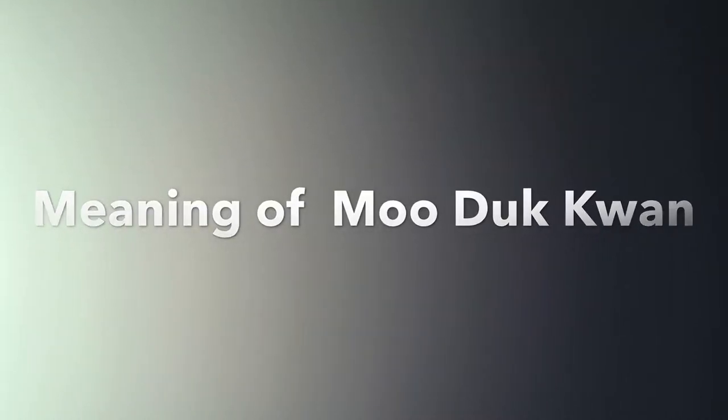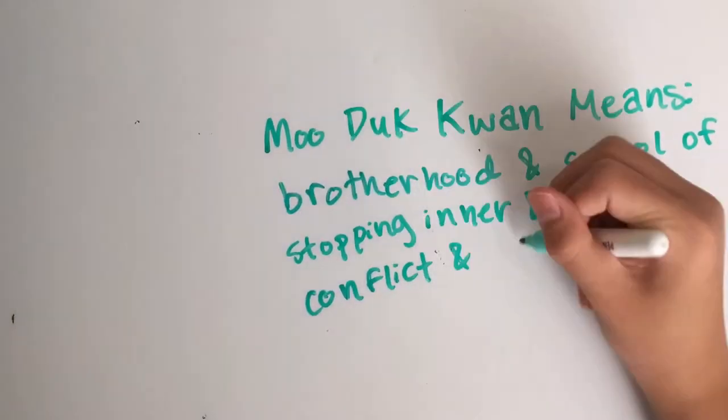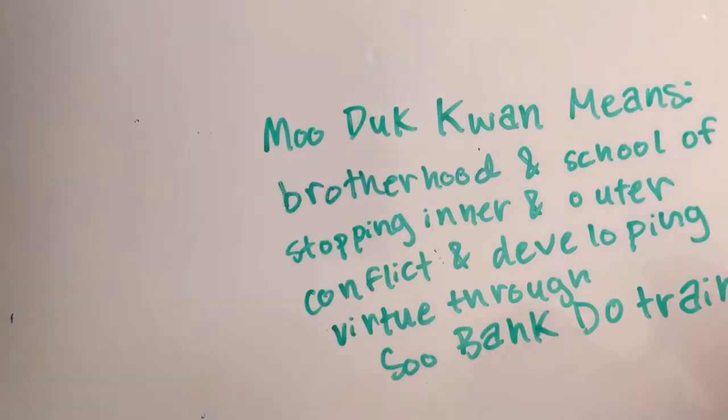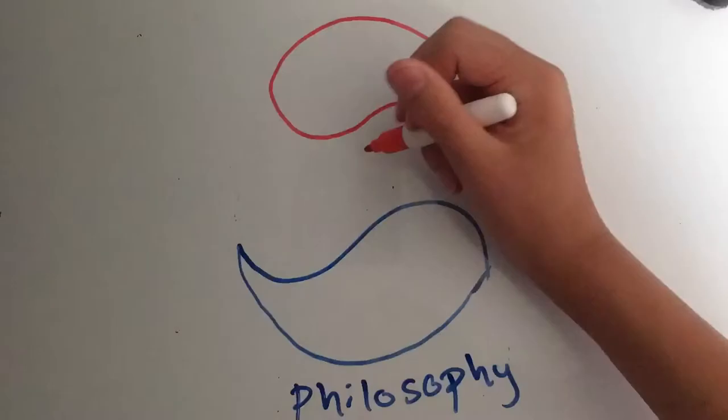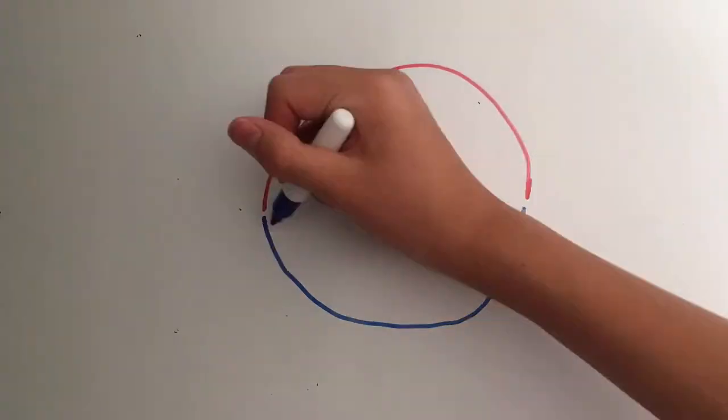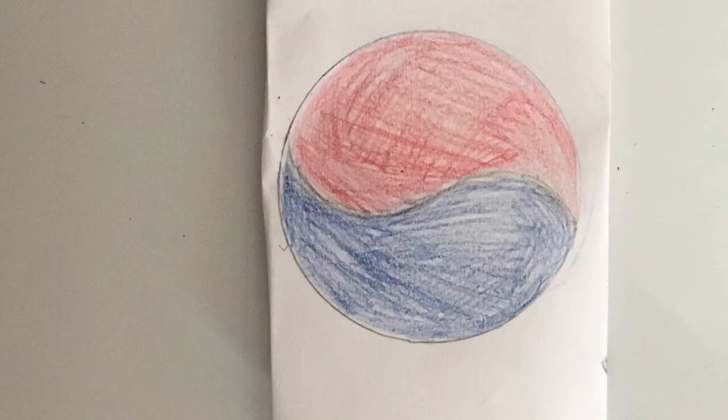By now, you might be wondering what Mudokwon means. Mudokwon means brotherhood and school of stopping inner and outer conflict and developing virtue through Tsubak-do training. I know, quite the mouthful. Mudokwon is the philosophy, and Tsubak-do is the technique. The two elements combined make harmony. This harmony creates an awareness that Tsubak-do Mudokwon training is a valuable and unique art form.